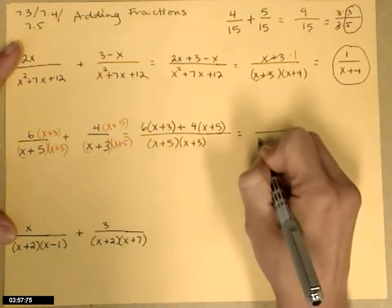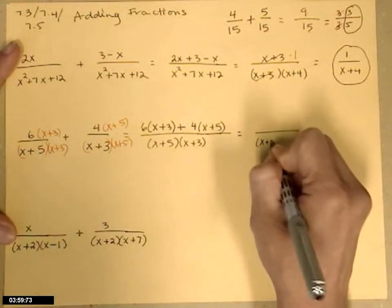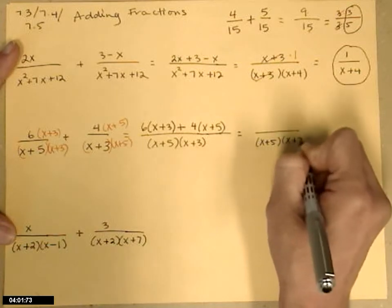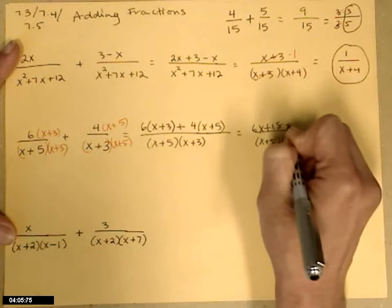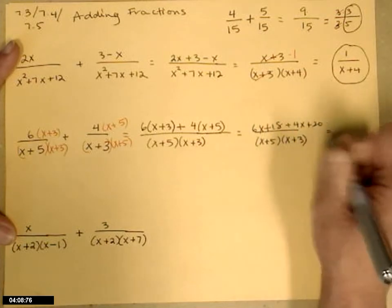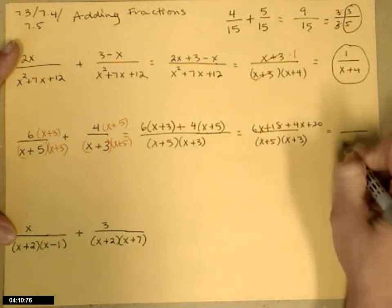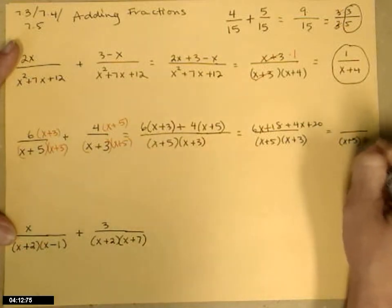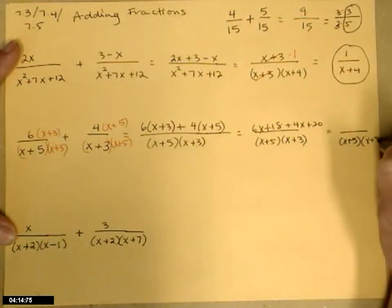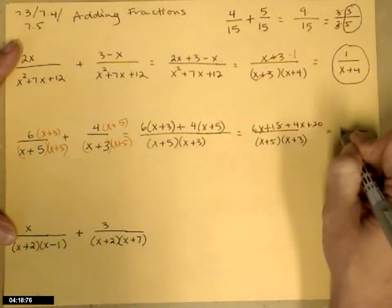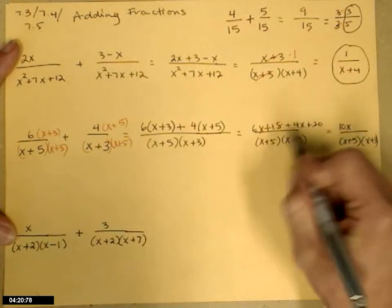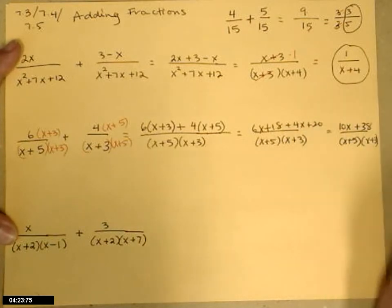Instead, we're going to tidy up that numerator by distributing and then combining like terms. So 6x plus 18 plus 4x plus 20. Again, that same denominator. 6x plus 4x is 10x, and 18 plus 20 is 38.